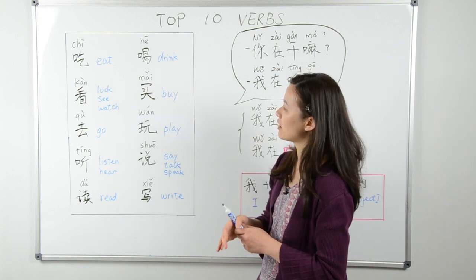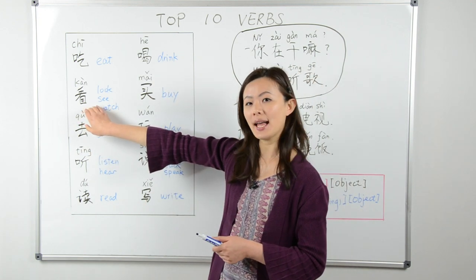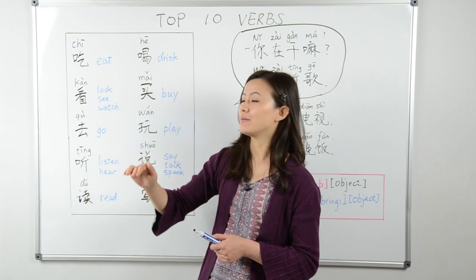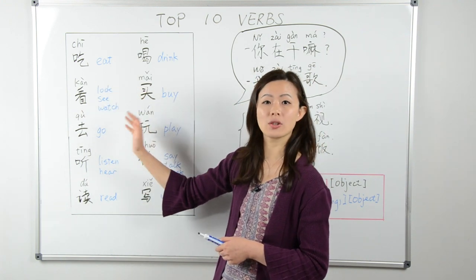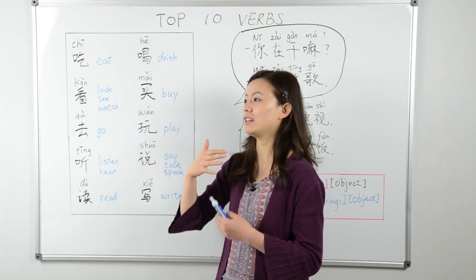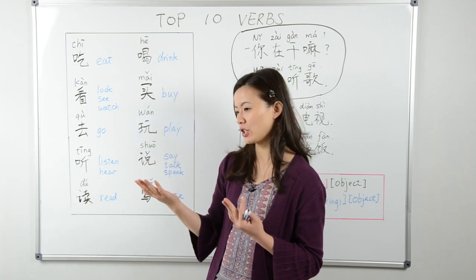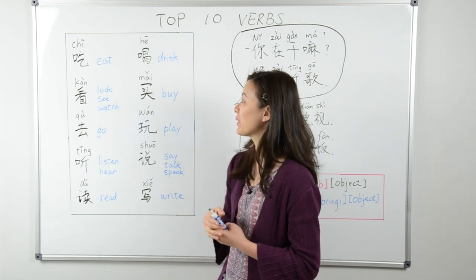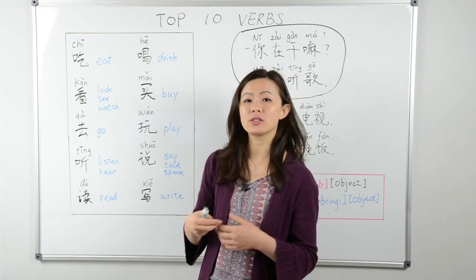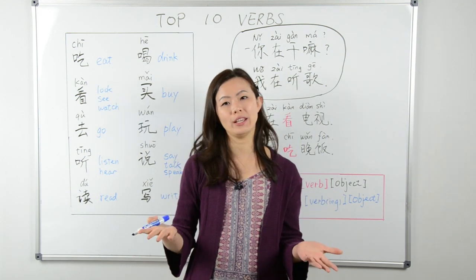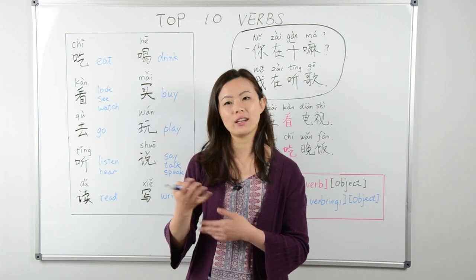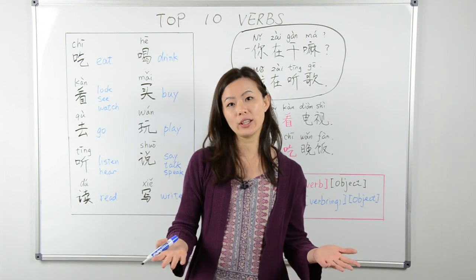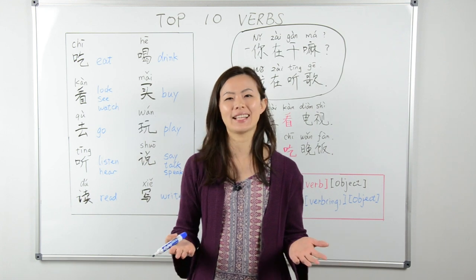Next on our list is 看. 看 means look, see, watch — any activity or action you use your eyes with. It's 看. For example, when you're window shopping and someone asks 'Can I help you?' you can just say 看看 — I'm just looking.